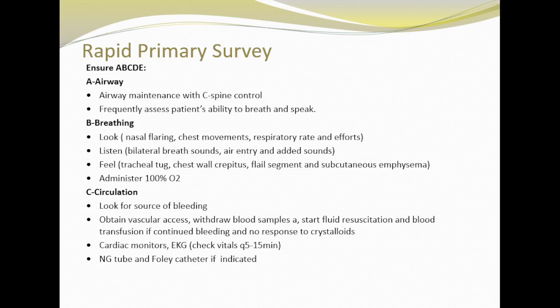Moving on to breathing. When assessing patient breathing, look for nasal flaring and chest movement, respiratory rate and effort. In addition, feel for tracheal tug, chest wall excursion, flail chest, and subcutaneous emphysema. When assessing breathing, we are looking for four major life-threatening chest trauma injuries: the most serious and common are tension pneumothorax, open pneumothorax, massive hemothorax, and flail chest. If you identify any of these conditions, manage right away to stabilize the patient.